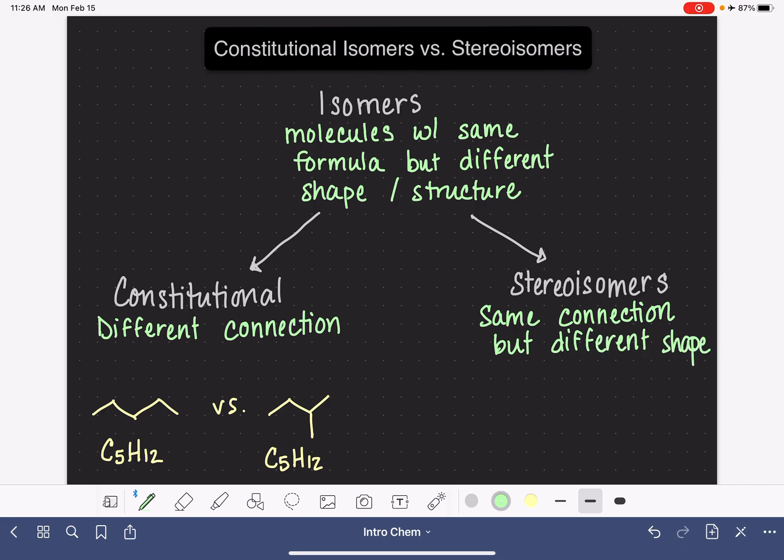One example of stereoisomers are cis and trans isomers. Both of these molecules have the same connection—carbon to a carbon to a carbon to a carbon. Same connection: single bond, double bond, single bond. They're different in terms of their orientation or their shape around the carbon-carbon double bond.